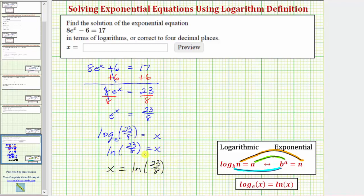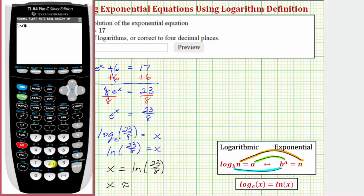Let's also get our decimal approximation for x. To do this, we'll use the calculator and enter natural log 23 divided by 8, close parenthesis, and enter. To four decimal places, x is approximately 1.0561.